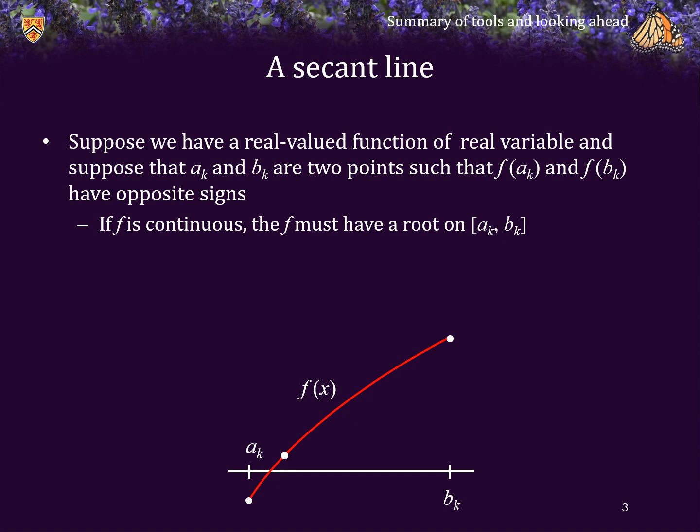The bisection method chooses the midpoint. However, taking a look at this function, you may think: why not find an interpolating line that connects the two endpoints, and then, as a better approximation of the root, choose the root of that interpolating line?